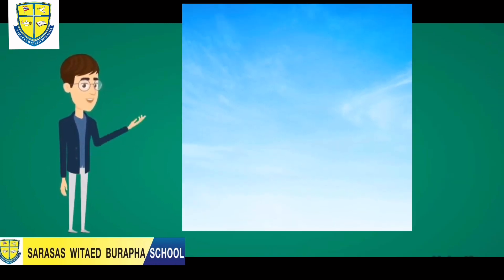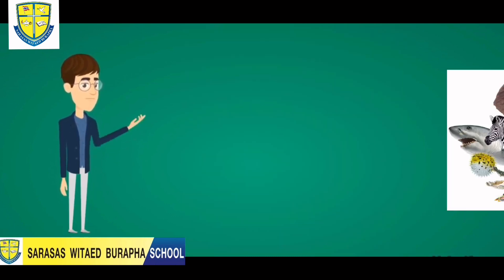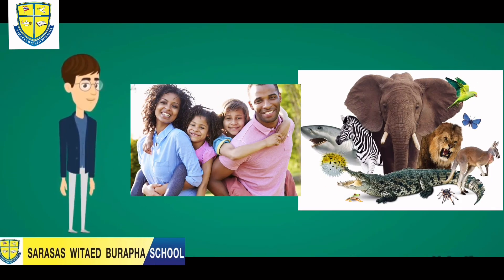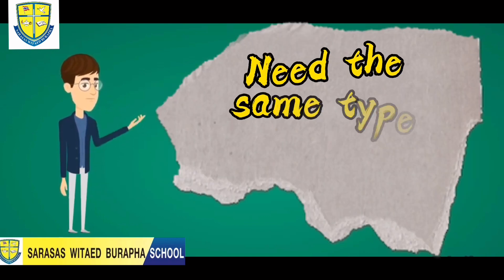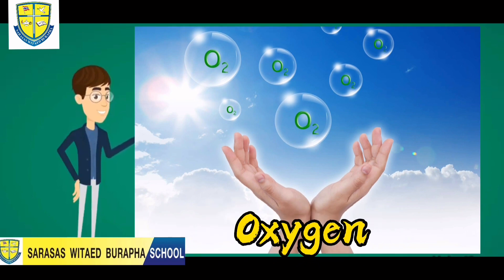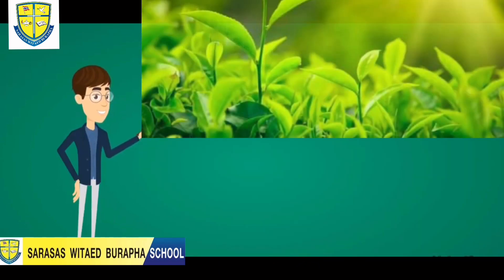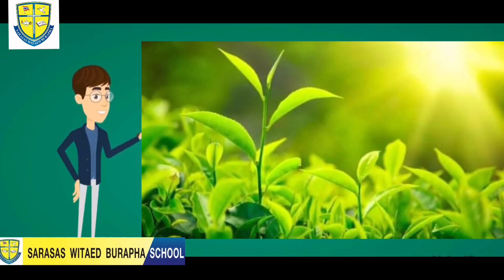Next, we have air. Animals and humans both need the same type of air, and that air is oxygen. Plants are different — plants need something different.